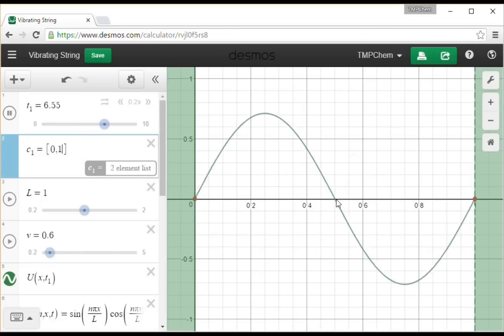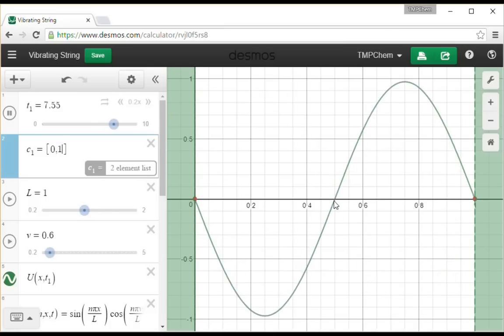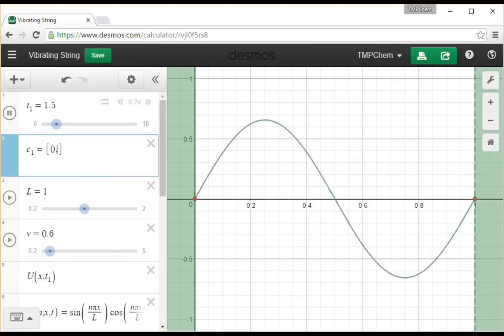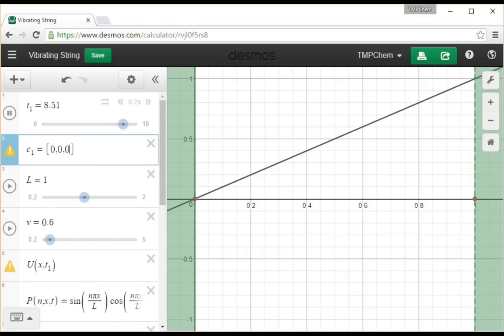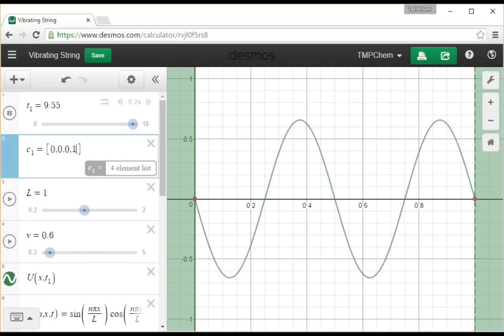This point in the middle here that doesn't move at all is called a node. There's one node for n equals 2, zero nodes for n equals 1. You might guess for n equals 3, we're going to have three waves and there's going to be two nodes. Still clamped down at the end, but we have one node here and one node here, and three distinct amplitudes as we go.